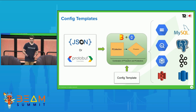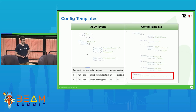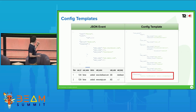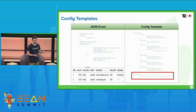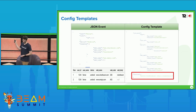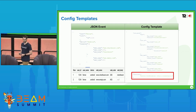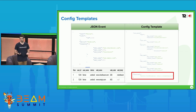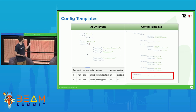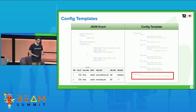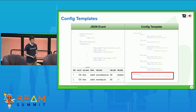Let me show you an example of how that looks in real life. Here you can see a JSON event on the right-hand side. It's a simple JSON — it doesn't have much, like nested elements here and there, an array, not very complex.